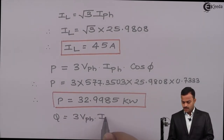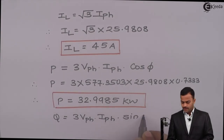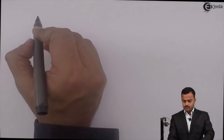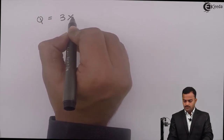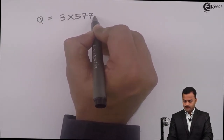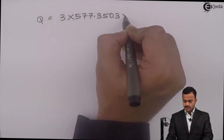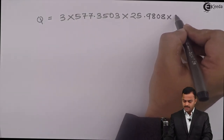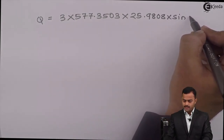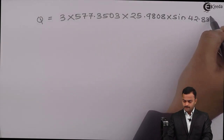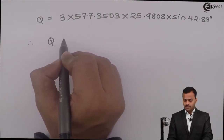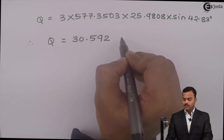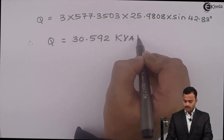Reactive power: Q = 3 · VPH · IPH · sinφ = 3 × 577.3503 × 25.9808 × sin(42.83°) = 30.5985 kilo volt-ampere reactive. This is the required answer.